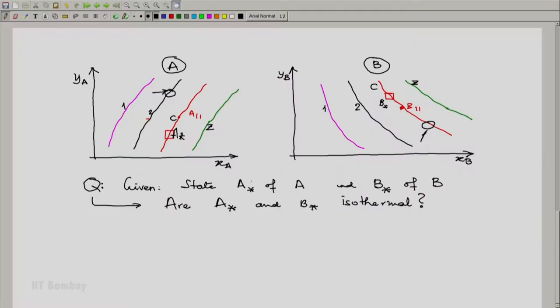So here now we will say that A star and B star, the same question, are isothermal if they lie on isotherms which have the same color or the same nomenclature here in labels. These labels on isotherms is what we call temperature.